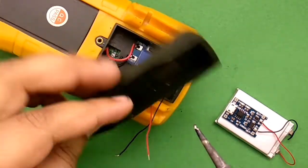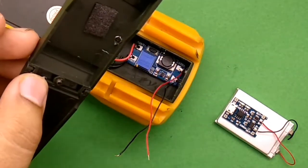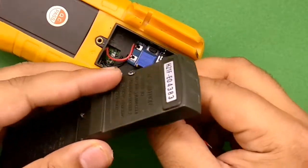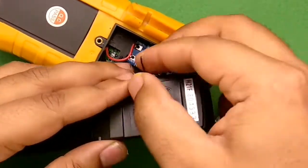I'm gonna make this small hole for wires using soldering iron. Take out the wires.